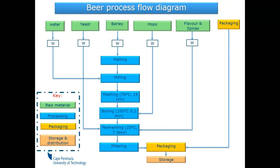A process flow diagram for beer shows a very complex process. You still have your ingredients, and there's always packaging — a flow diagram is incomplete without packaging. Starting with weighing, it goes to malting, milling, and then mashing at 76 degrees for 15 minutes. We also have boiling at 100 degrees for 5.2 minutes, then fermentation at 25 degrees for seven days. After that it goes to filtering, packaging, and storage and distribution. The color key shows: green for raw materials, blue for processing, and orange for packaging.